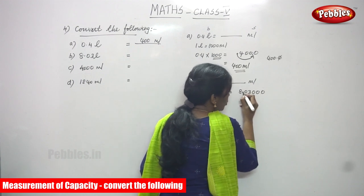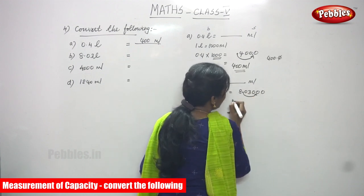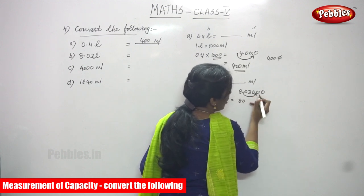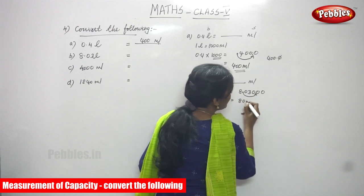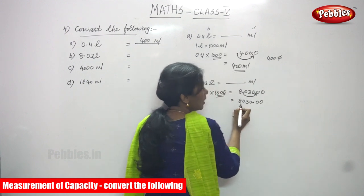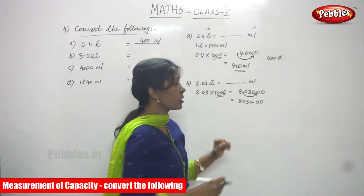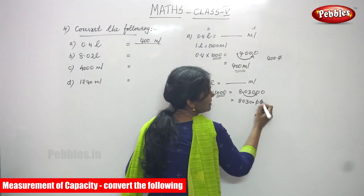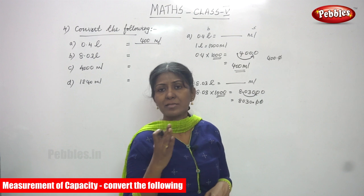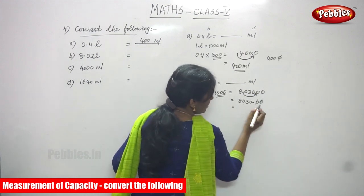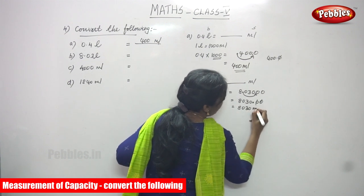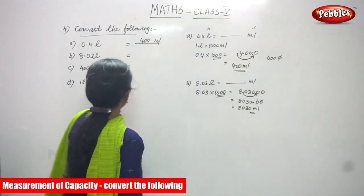Moving the decimal point three places to the right gives 8030. After the point you have double zeros, which have no value, so just leave them out. The answer is 8030 milliliters. This is the right answer for the question.